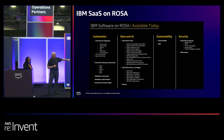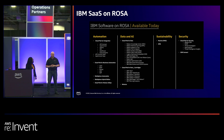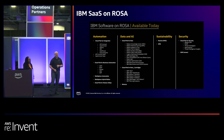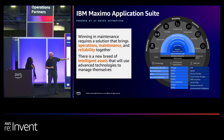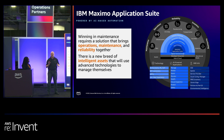IBM delivers all of this software as a service on ROSA. Let's talk about Maximo — one of the widest-deployed applications in the industry for asset management. It's been around 20 to 30 years. Eight out of the top nine utilities use it; eight out of the top nine airports use it. They're currently going through a migration from version seven to version eight, and version eight is containerized.